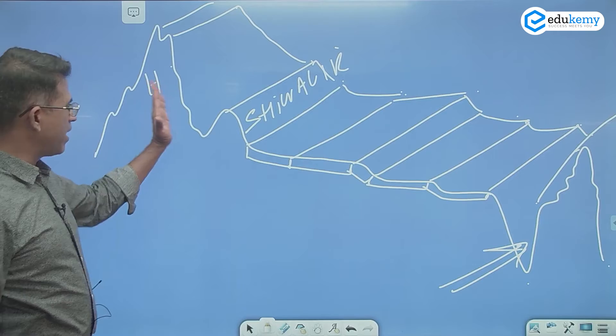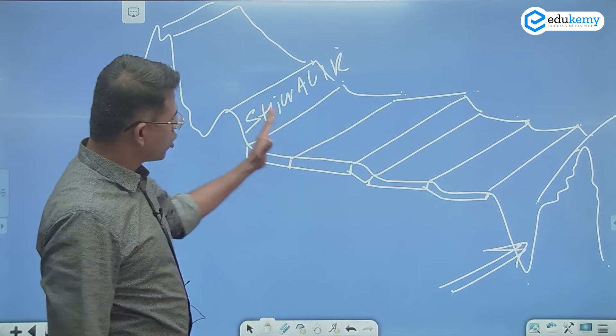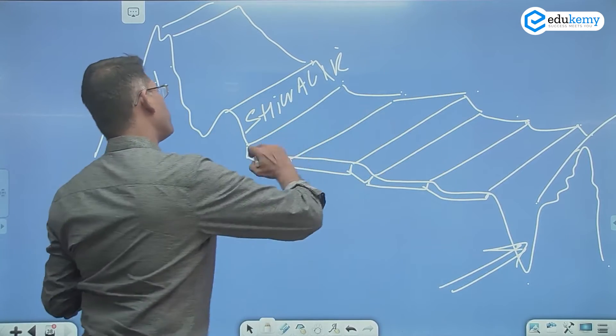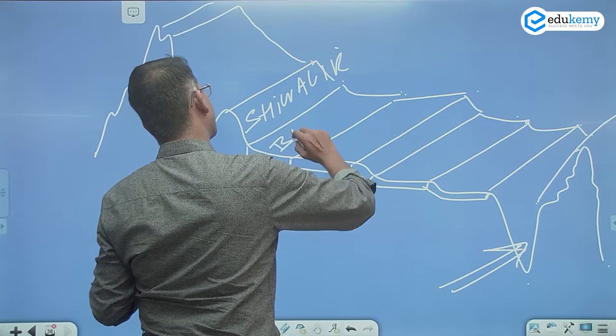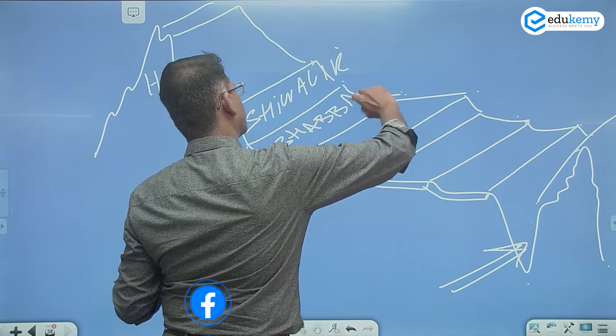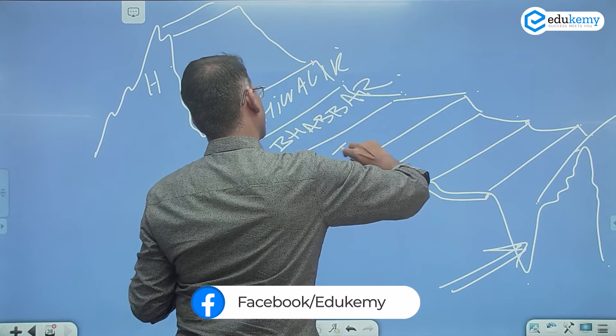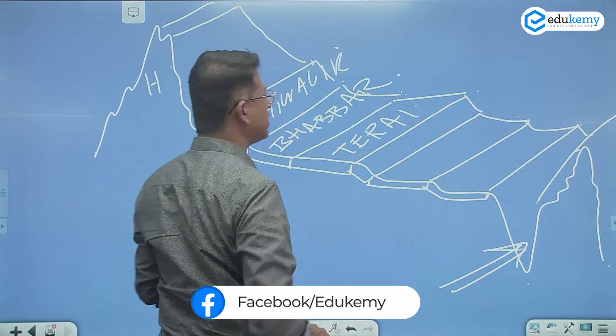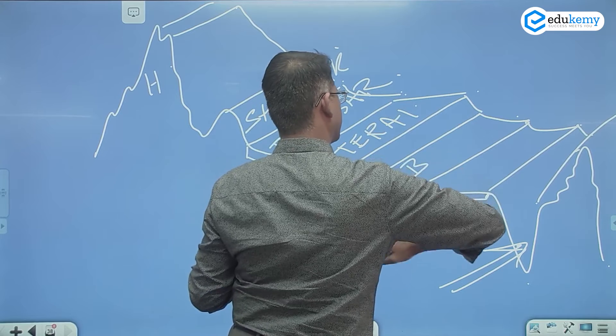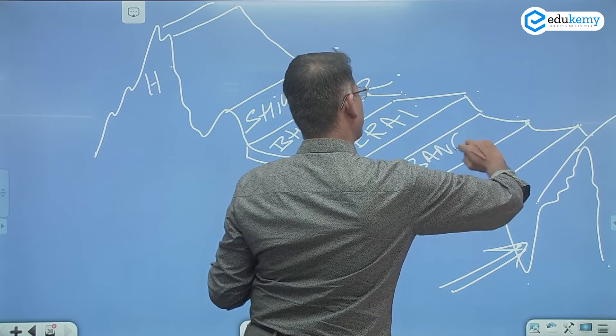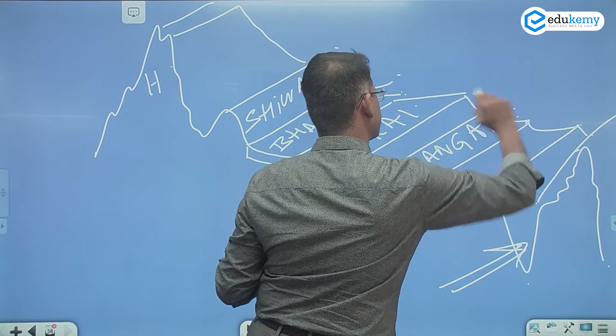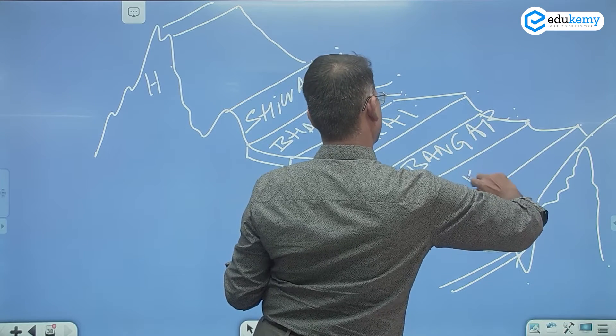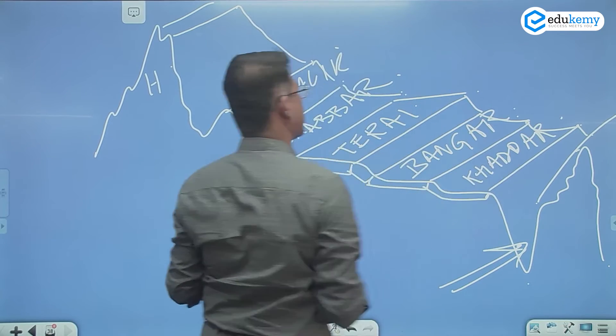Between Himalayas and the Ganga there are north-south divisions. This is called as the Bhabar region. This is called as the Terai region. This is Bangar plains. This is Khadar plains.